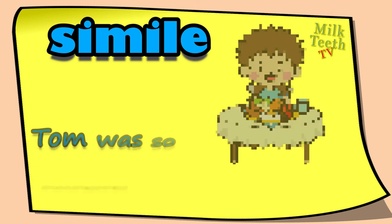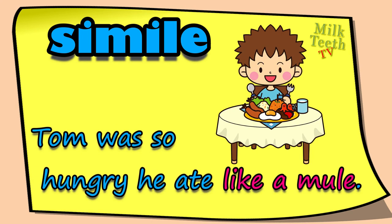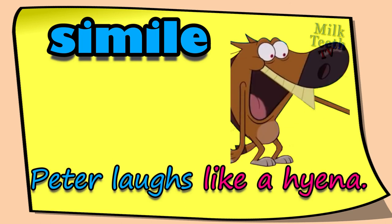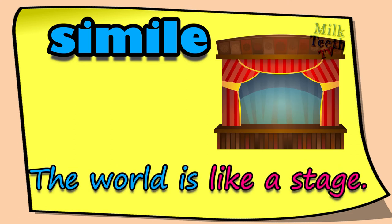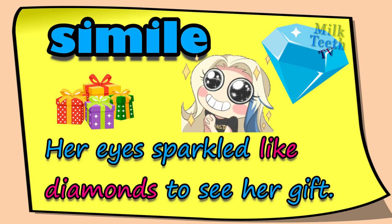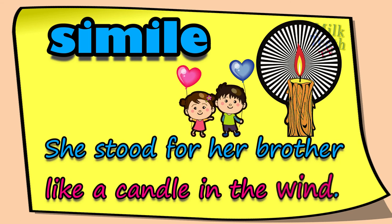Now, comparisons using 'like': 'She swims like a fish' — simile: like a fish. 'Tom was so hungry that he ate like a mule' — simile: like a mule. 'Peter laughs like a hyena' — simile: like a hyena. 'The world is like a stage' — simile: like a stage.